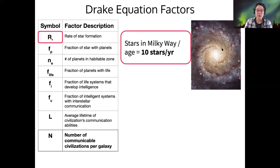So the first factor is the rate of star formation in our galaxy. We can actually estimate this because we can count how many stars are in the Milky Way now. We know the overall age of the galaxy, so we estimate that the rate of star formation is about 10 stars per year.